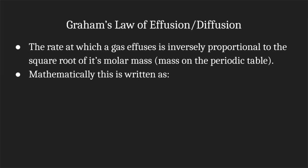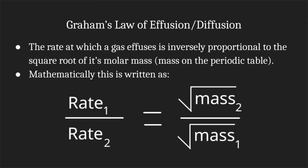Mathematically, we'll write this as the rate of gas 1 divided by the rate of gas 2 equals the square root of mass 2 divided by the square root of mass 1. Let's try some questions using this equation.